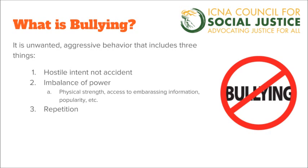What are these three things? Number one: hostile intent, and not accident — meaning it was not a miscommunication, it's not someone who's joking around. It is actually someone who wants to physically, emotionally, or psychologically harm someone else. There's hostile intent — they want to cause pain and suffering to the victim.